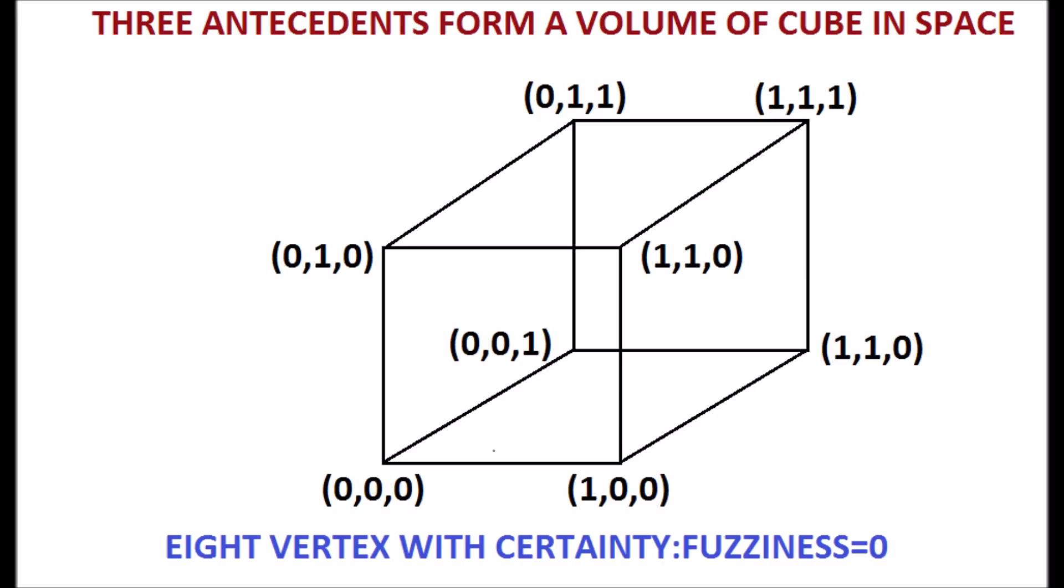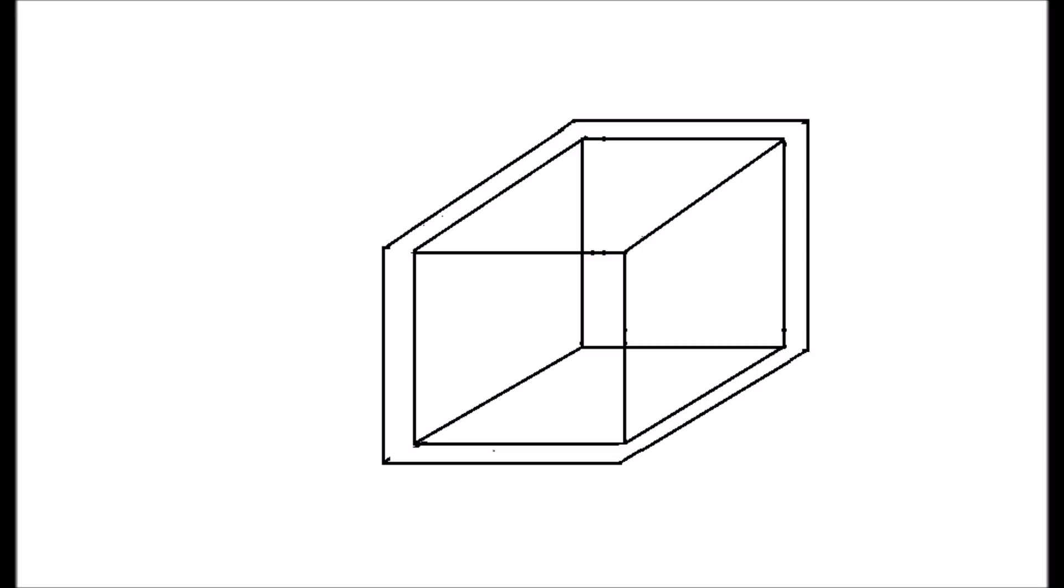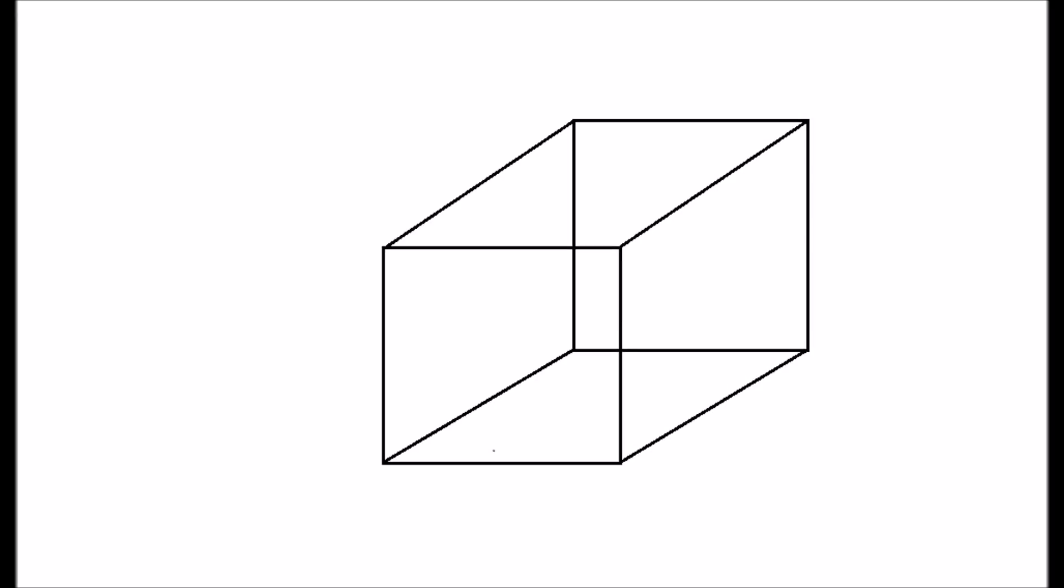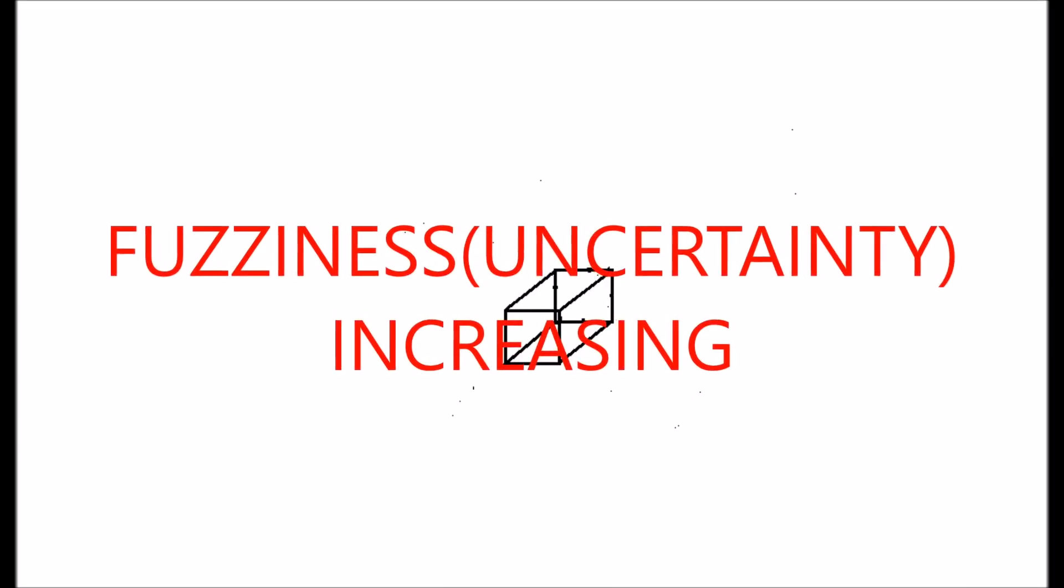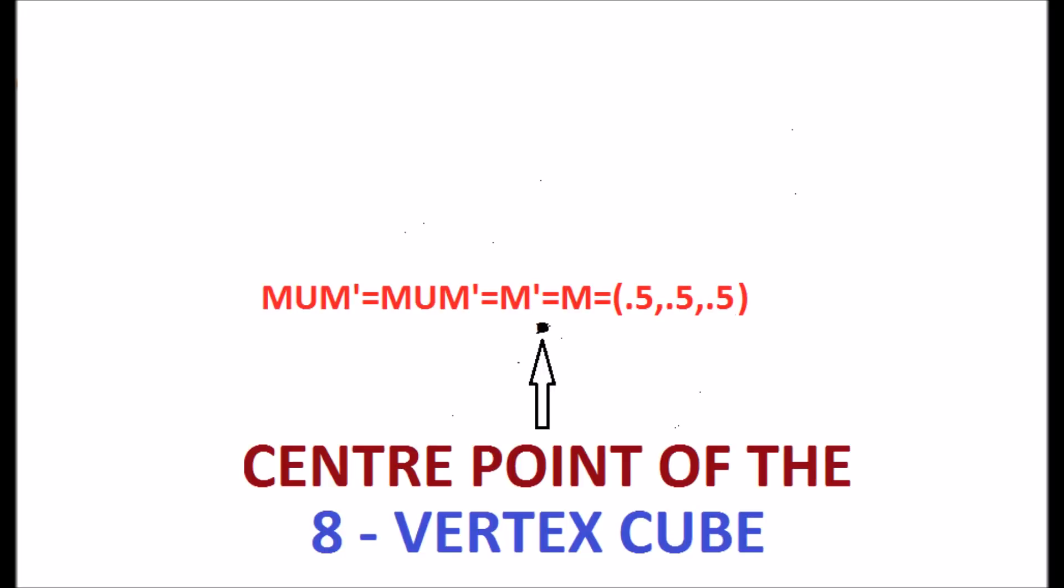There are many fuzzy sets inside the unit cube. Each fuzzy set occupies a volume of a cube inside and the volume decreases when fuzziness is going on increasing as shown in the display and becomes a point. The point is the center of the cube, M, having membership value 0.5, 0.5, 0.5 and fuzziness is also maximum equal to 1.